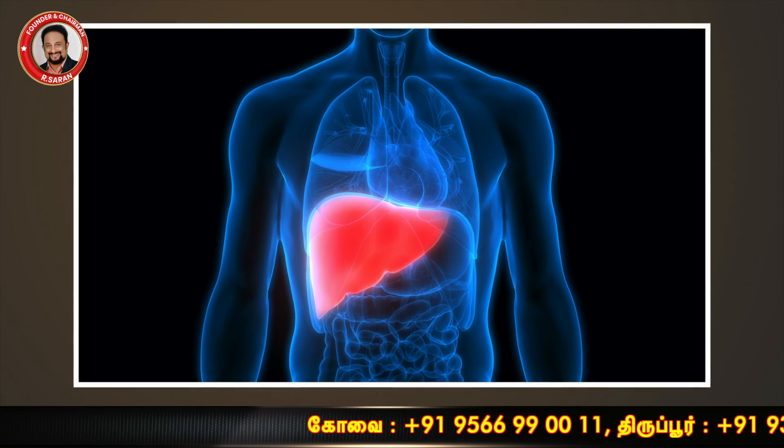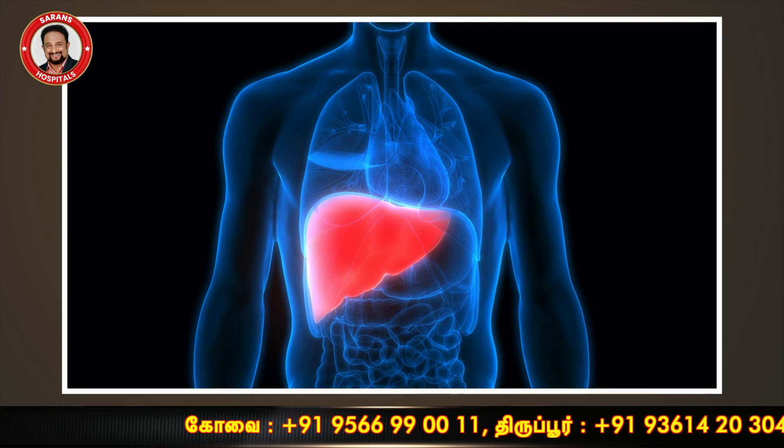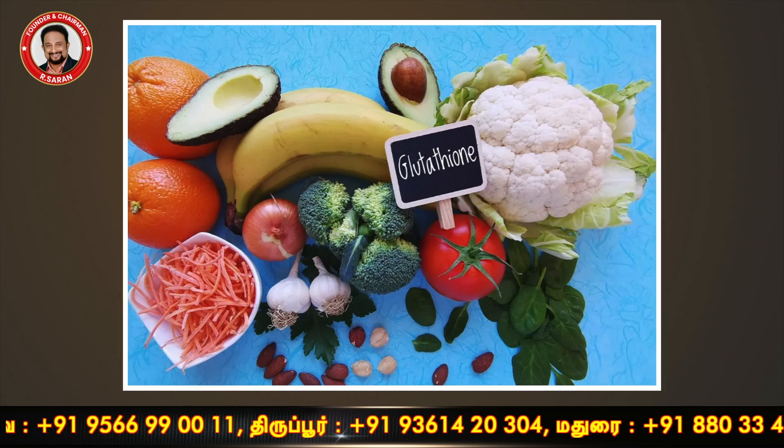Hello everyone, my name is Sveta. Let's talk about glutathione. Glutathione is a protein found in the liver and is also present in many fruits and vegetables.